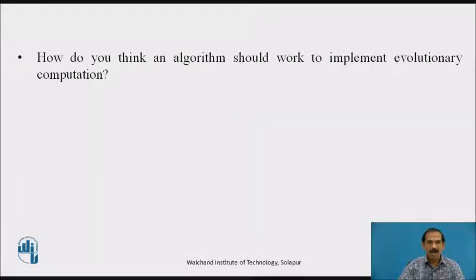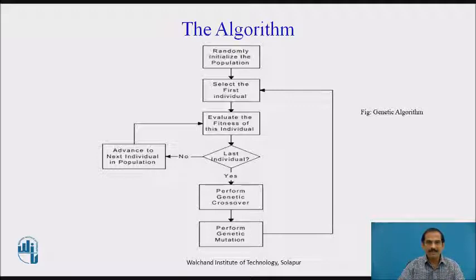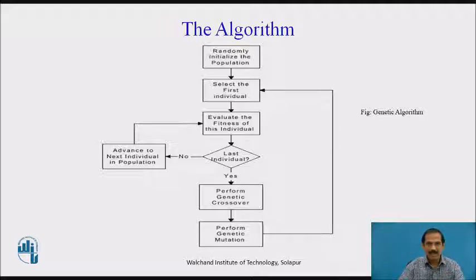Now let us consider how this algorithm should work to implement evolutionary computation. The algorithm, expressed in a flowchart, randomly initializes the population, which consists of a set of chromosomes with the potential to achieve particular best results. We select the first individual and evaluate its fitness. If it is fit, we perform crossover and mutation and finally select the best chromosome with a good objective or fitness function. If it is not fit, we go on to select the next chromosome.